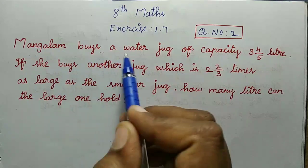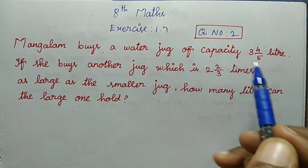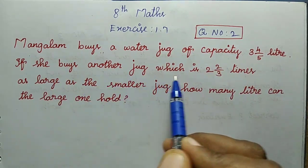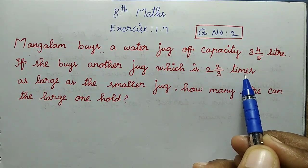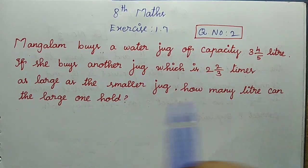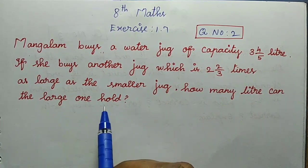Mangalam buys a water jug of capacity 3 4/5 litres. If she buys another jug which is 2 2/3 times as large as the smaller jug, how many litres can the larger one hold?